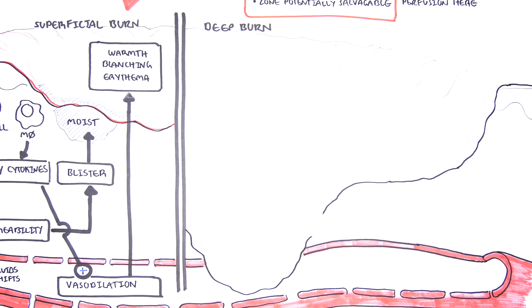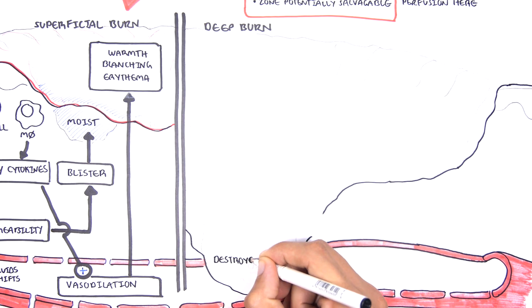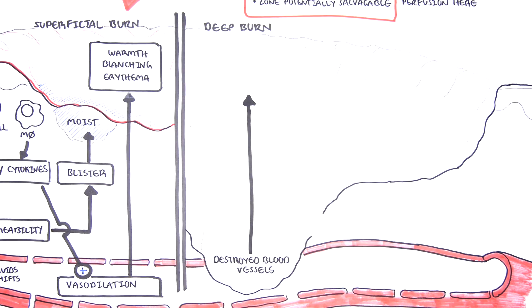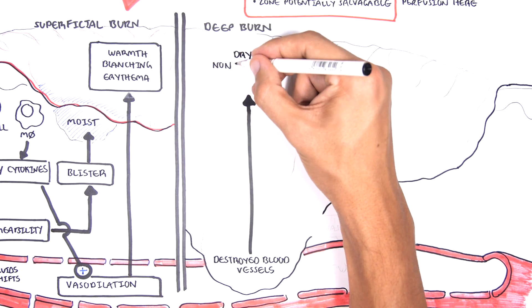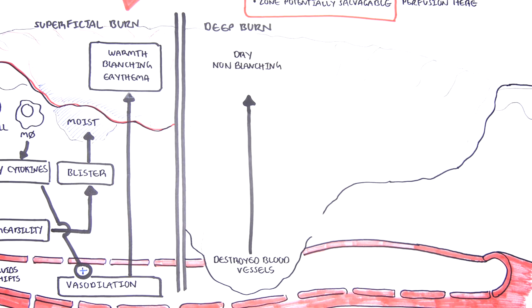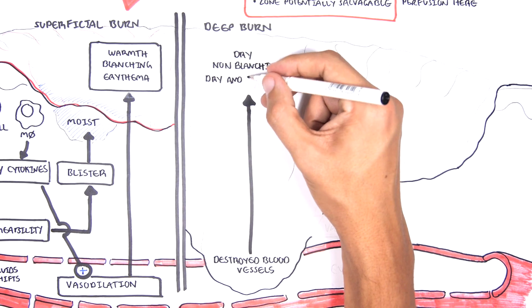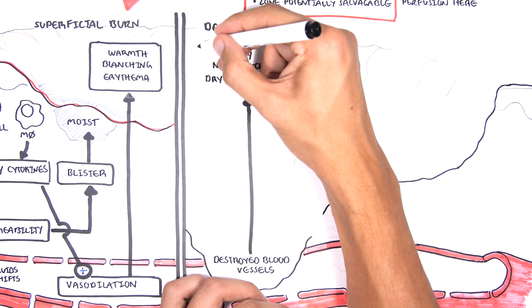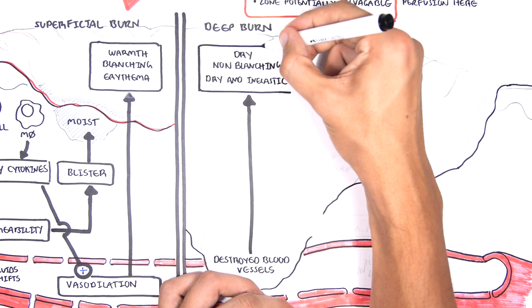Deep burns can thus damage blood vessels in the skin. Because you have damaged blood vessels, everything will leak out. You have no blood supply to the area, so you eventually get this dry, non-blanching surface. It is dry and inelastic. The non-blanching dryness is an important feature of deep burns.